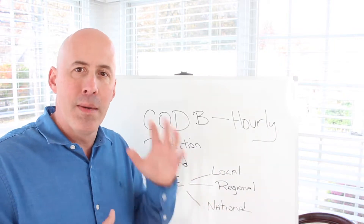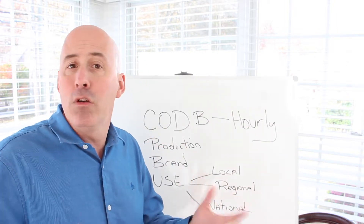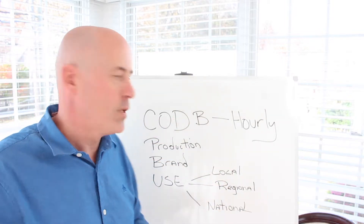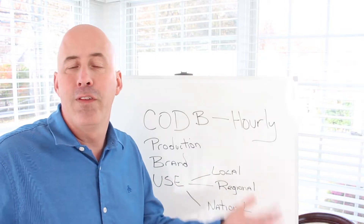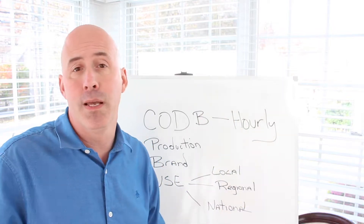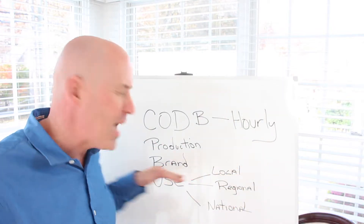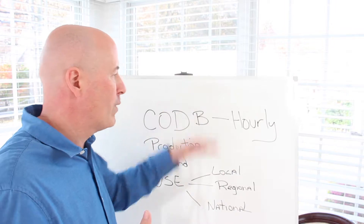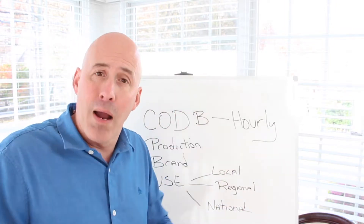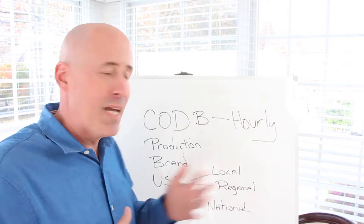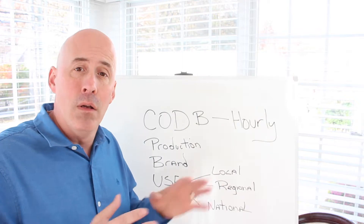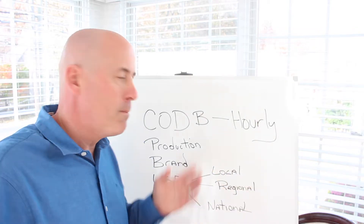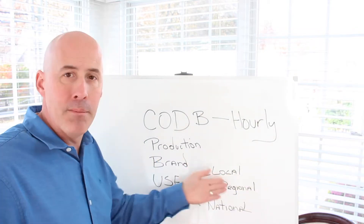We have a video coming up on figuring out usage. But you could have a standard percentage — maybe local just covers the base rate of $3,000. Regional, you'd add a 25% or 50% premium. National could be 100% or 200% premium on your standard local rate. I use the local rate as my standard because a lot of my clients are local. So if I had 10 photographs to create in a day and could do all 10 that day, I'd divide $3,000 by 10 — that's $300 per image.